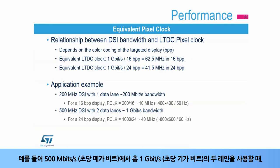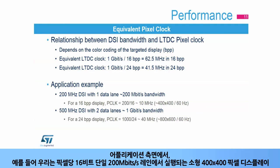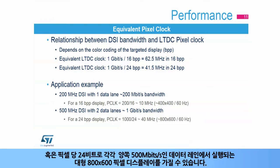As an example, when using two lanes at 500 megabits per second for a total of 1 gigabit per second, the maximum equivalent pixel clock is 62.5 megahertz for 16-bit per pixel coding and 41.5 megahertz for 24-bit per pixel coding. In terms of application examples, a small 400x400 pixel display can run on a single 200 megabit per second lane at 16 bits per pixel, or a large 800x600 pixel display at 24 bits per pixel can run on both data lanes at 500 megabits per second each.